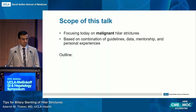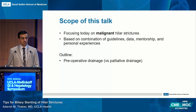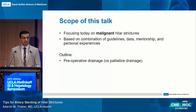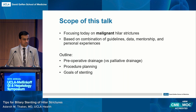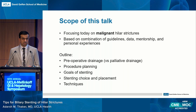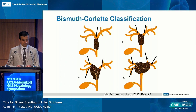I'll point out a few areas where we do have data. We're going to start by talking about whether you're considering a hilar stricture as a preoperative drainage procedure or if this is a patient that's never going to make it to surgery. Then we'll go into procedure planning, the goals of stenting, how to pick a stent and where to place them, and some tips and techniques to accomplish those goals.